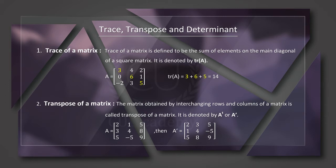Then, the trace of this matrix is denoted by Tr of A. Now, Tr of A represents the trace. If we have the matrix, Tr of A is the trace.